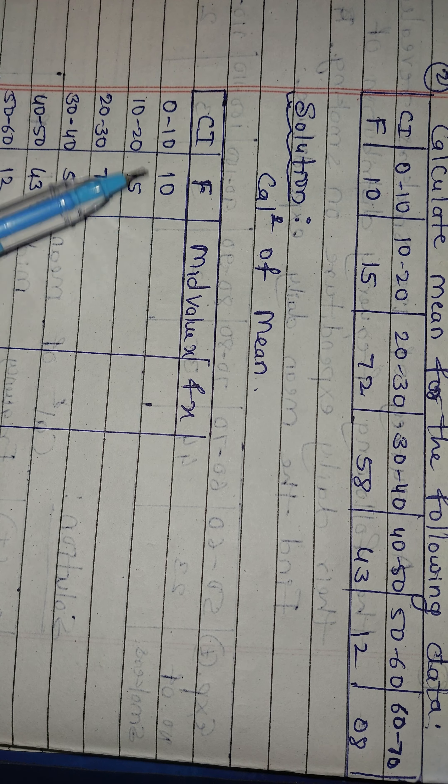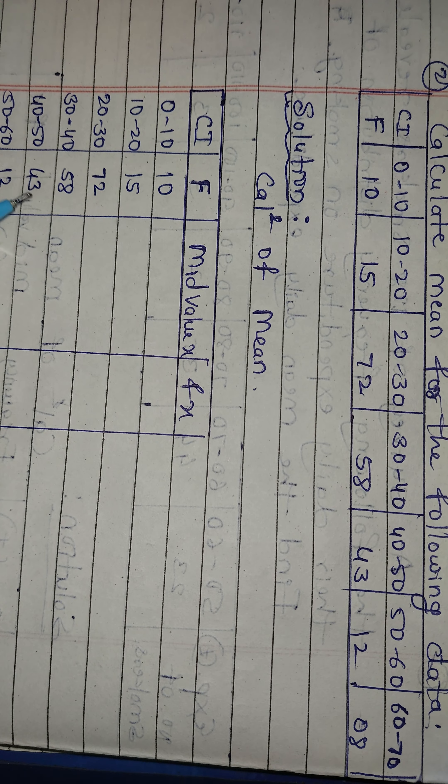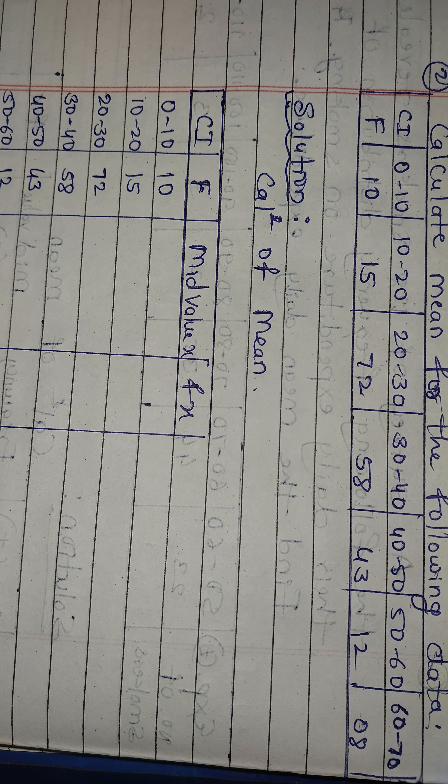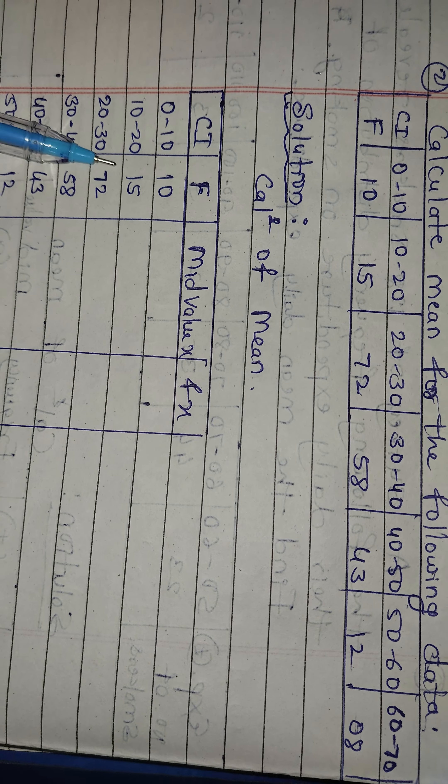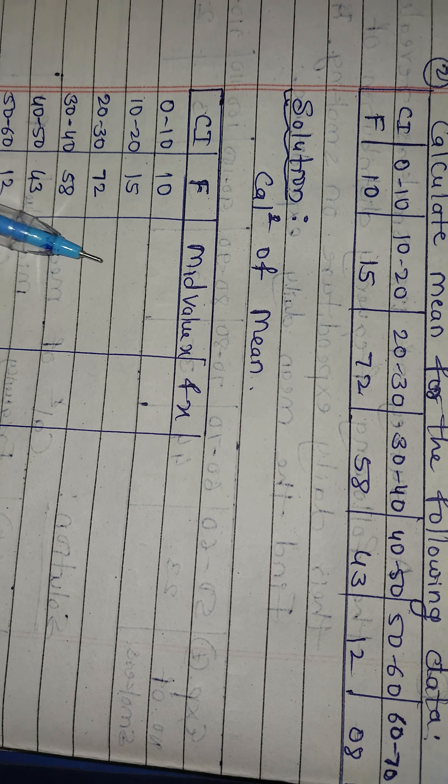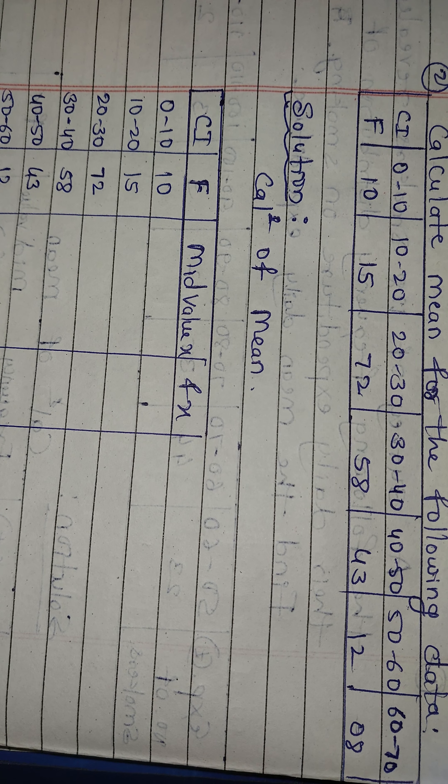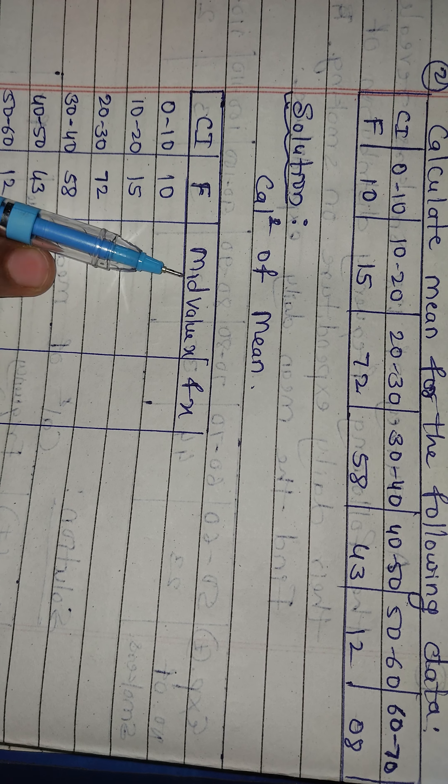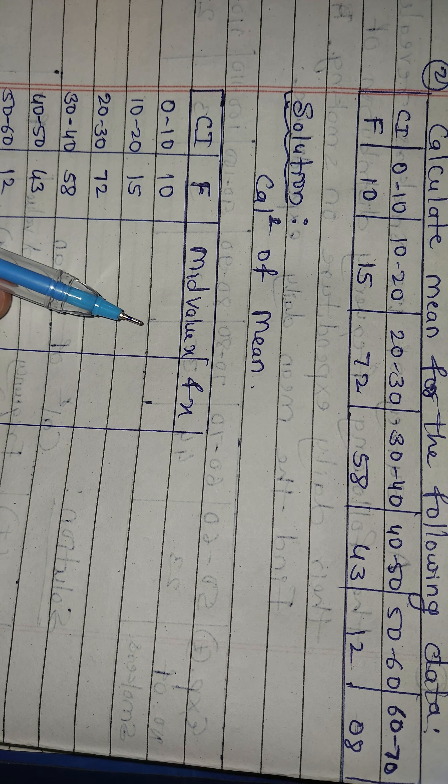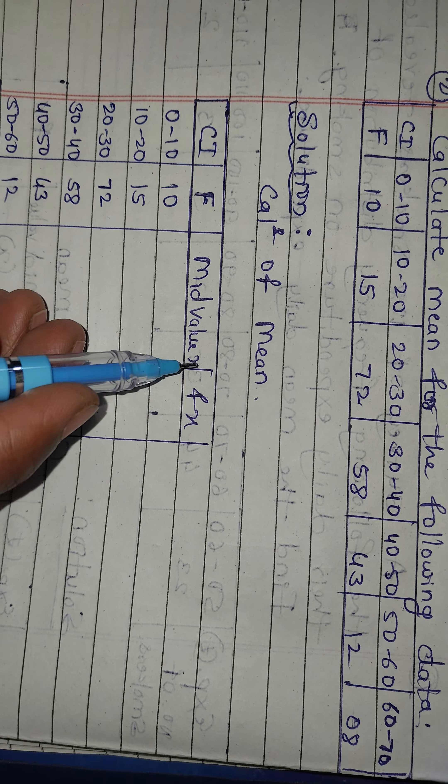So F column has 10, 15, 72, 58, 48, 12, 8 as it is. Already in the question. Now we need two extra columns for the calculation to manage the solution. Naturally, first we need the middle value, X value.